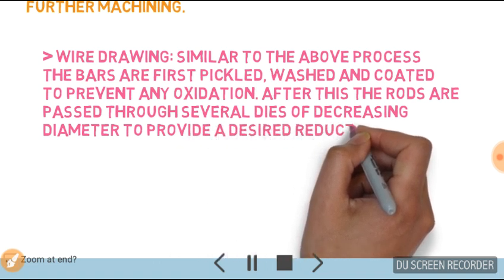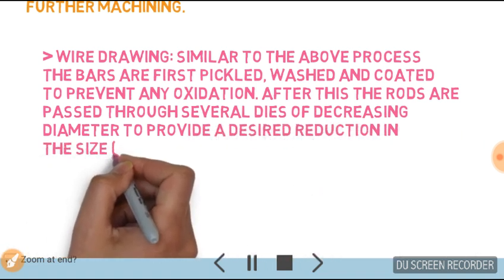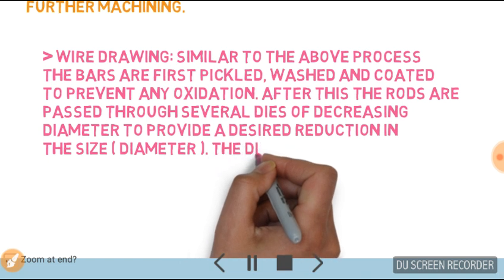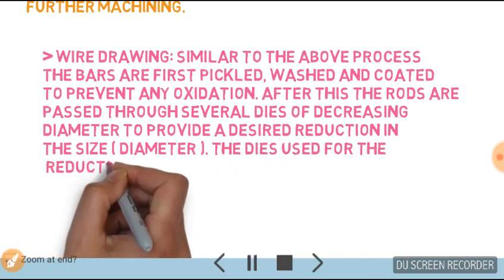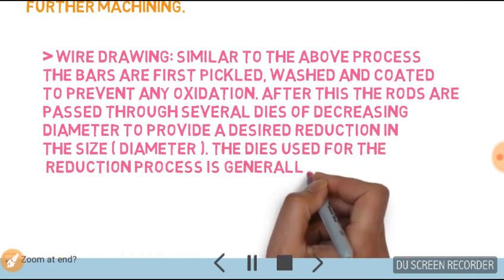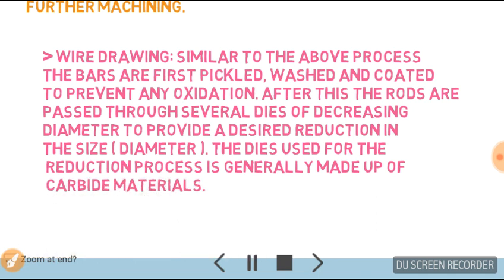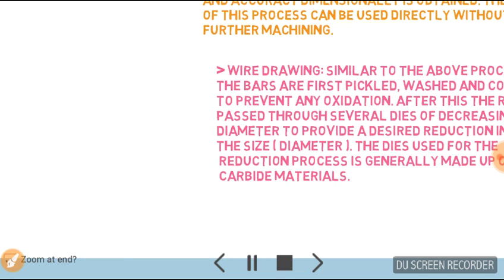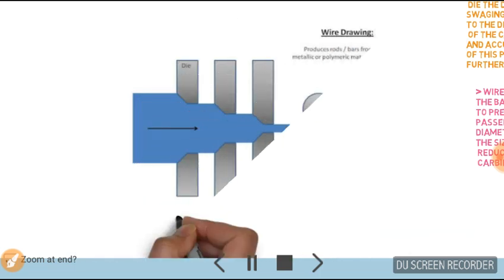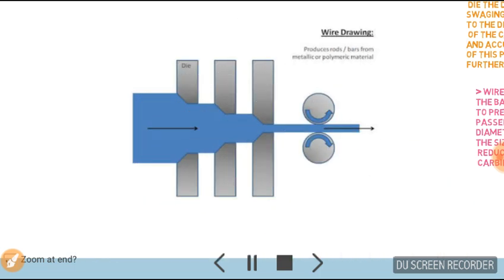This provides a desired reduction in the size or diameter. The dies used for the reduction process are generally made up of carbide materials. This is the basic diagram of wire drawing.